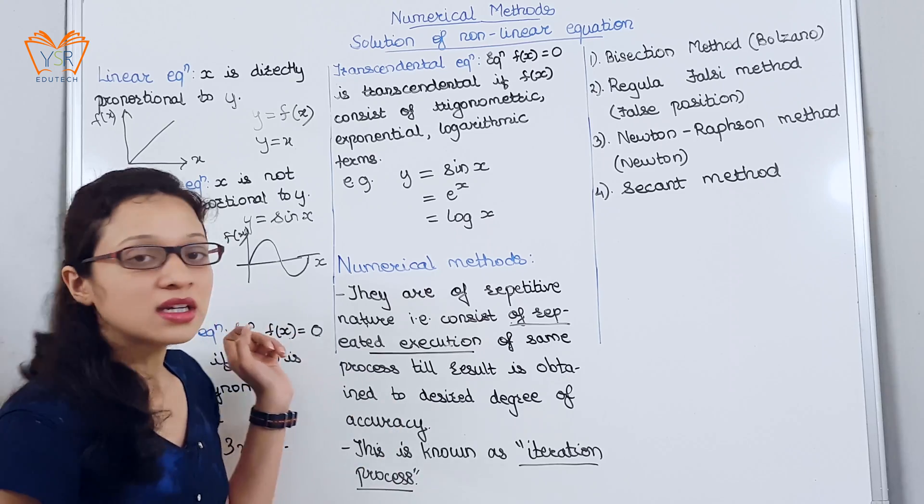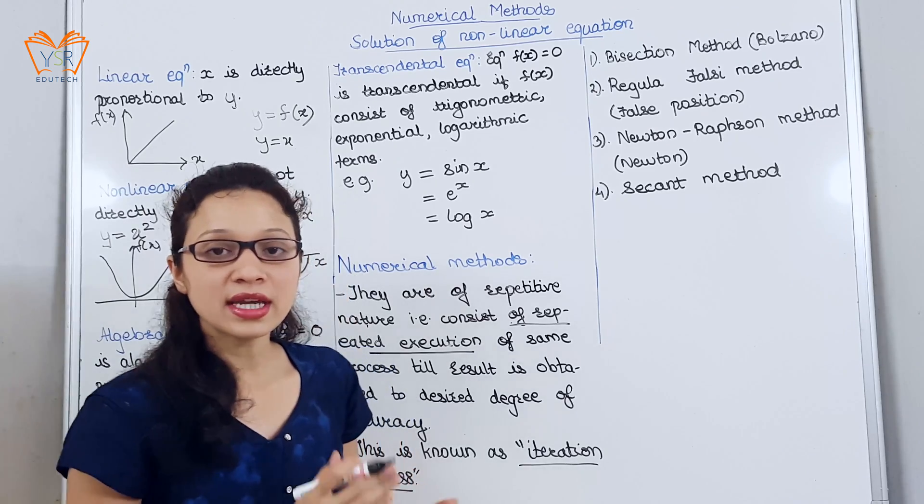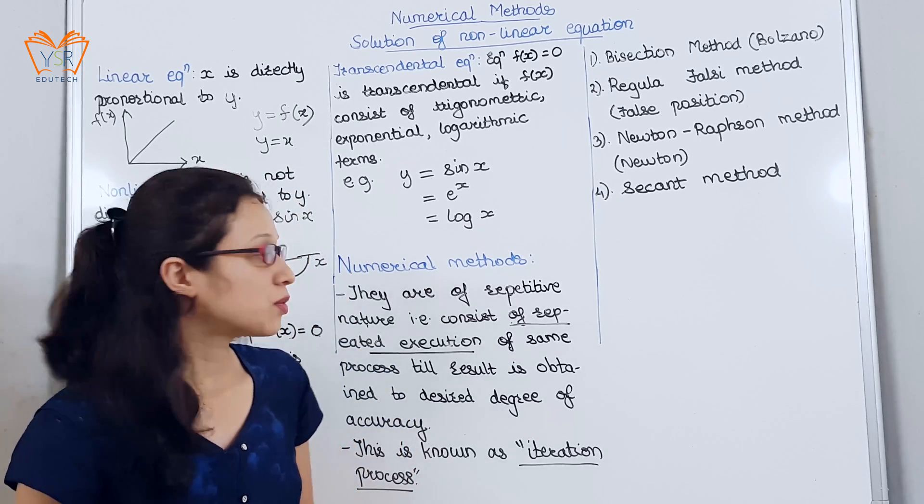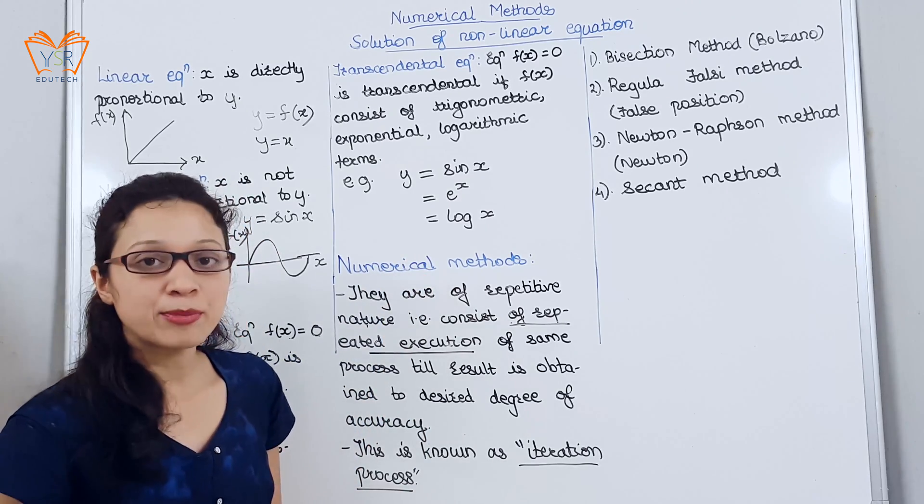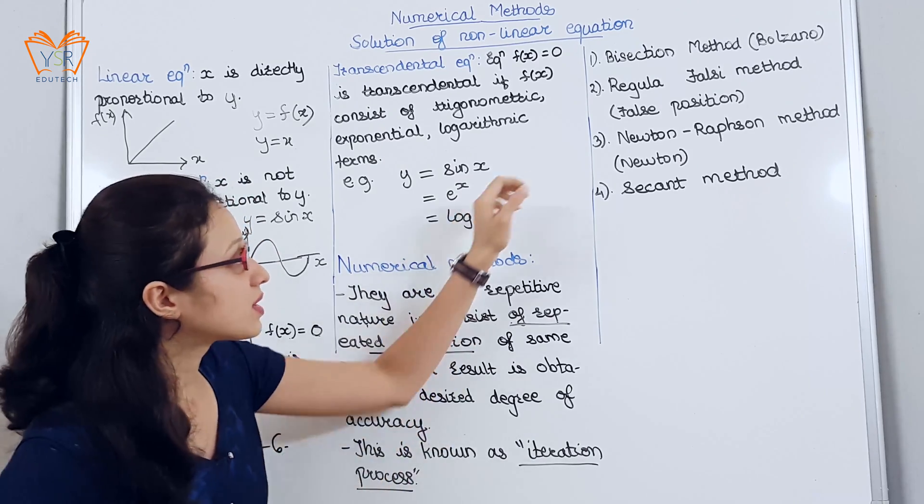Now, in the analytical methods, we get the exact root of that equation. But in numerical, we get the approximate root. To find out the approximate root, we have few methods.